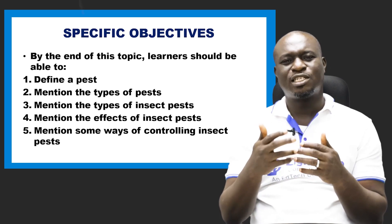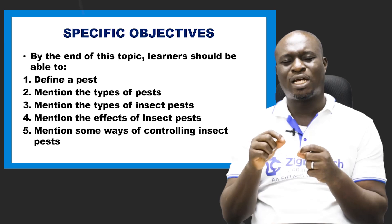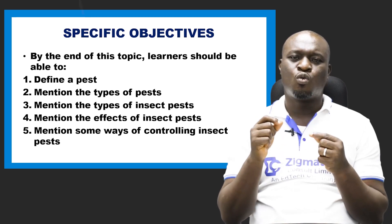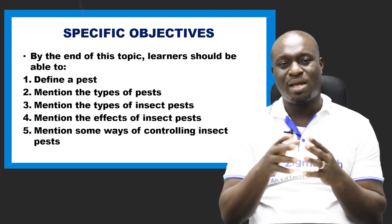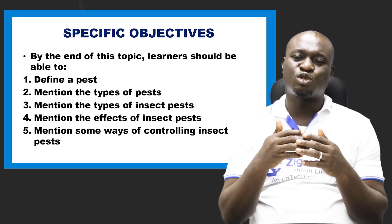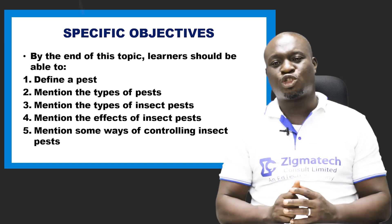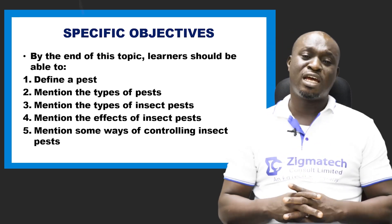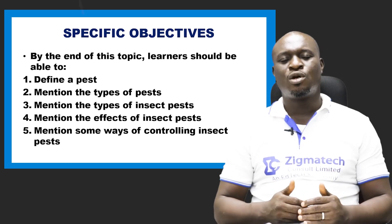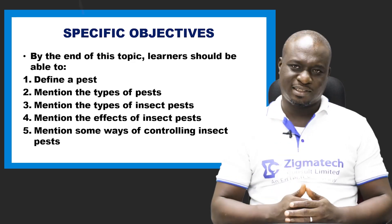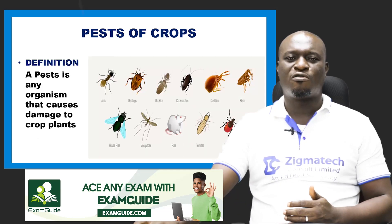If you're able to answer these questions, it simply means you have actually understood the topic. Number one: you should be able to define what a pest is. Number two: you should be able to mention the types of pest. Number three: you should be able to tell the types of insect pest. Number four: you should be able to mention the effects of insect pest. And number five: you should be able to explain some of the ways we can control or prevent insect pest. Now, if you are ready for this, let's begin with the definition of pest.